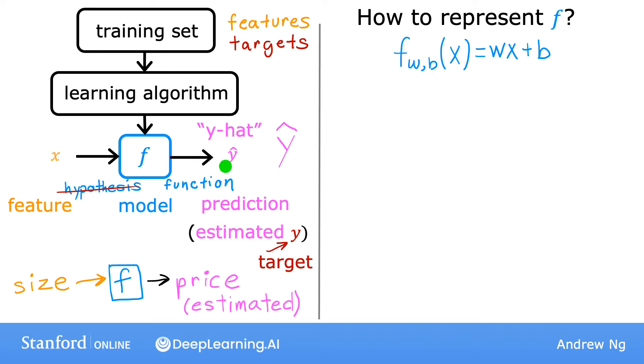The values chosen for w and b will determine the prediction y-hat based on the input feature x. So this f_w,b of x means f is a function that takes x as input, and depending on the values of w and b, f will output some value of a prediction y-hat.